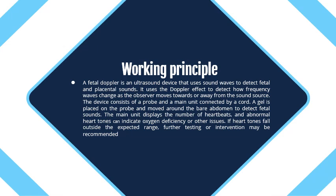Moving on to the working principle: a fetal Doppler is an ultrasound device that uses sound waves to detect fetal sounds. It uses the Doppler effect to detect how frequency waves change as the observer moves towards or away from the sound source. The device consists of a probe and a main unit connected by a cord. A gel is placed on the probe and moved around the bare abdomen to detect fetal sounds. The main unit displays the number of heartbeats, and abnormal heart tones can indicate oxygen deficiency or other issues. If heart tones fall outside the expected range, further testing or intervention may be recommended.